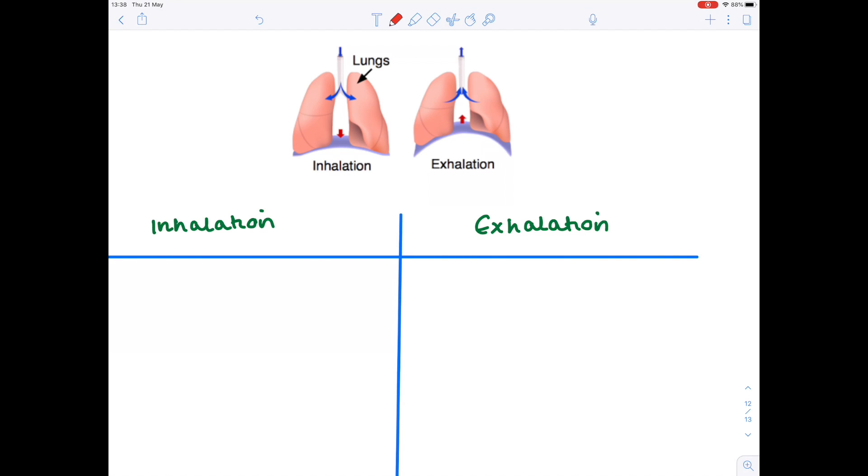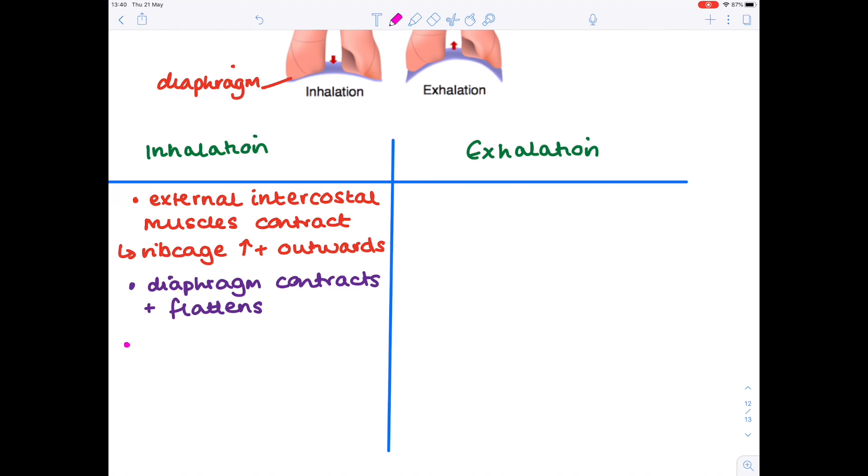So the first thing that takes place with an inhalation is that the external intercostal muscles contract. And the real effect of that is that the rib cage moves up and outwards. If you have a look at what's happening to the diaphragm, you can see here on the left-hand side that the diaphragm has flattened, it has contracted. The effect of both of these actions is to increase the volume within the chest cavity, that is known as the thorax.